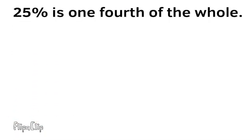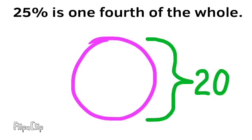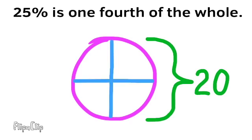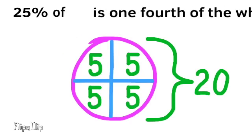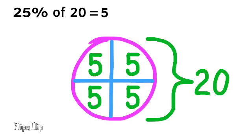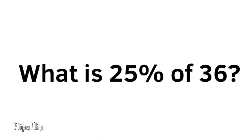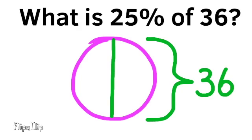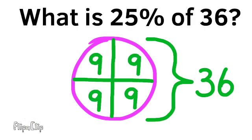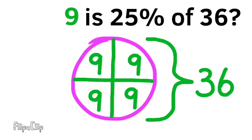Something to memorize: 25% is 1 fourth of the whole. Imagine this circle represents the whole, and the value is 20. Divided into fourths, each of the fourths is worth 5. So 25% of 20 is 5. What is 25% of 36? Since 36 divided by 4 equals 9, then 9 is 25% of 36.